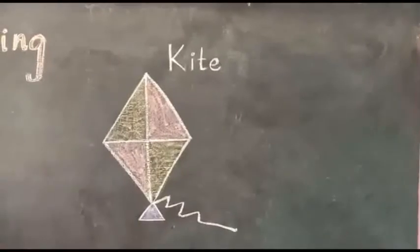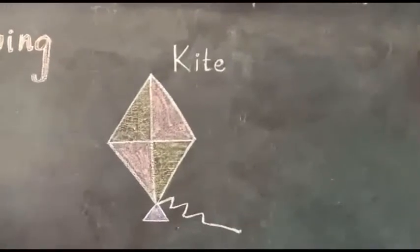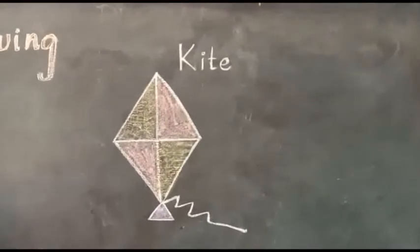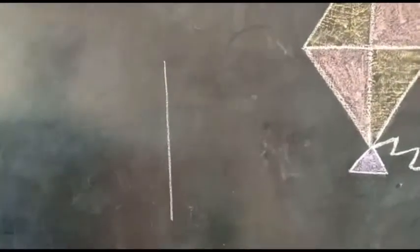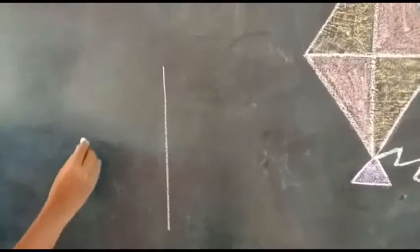Next, kite. Now we draw a kite. Kite means pattam. Draw one straight line. Next, draw one horizontal line in the middle.